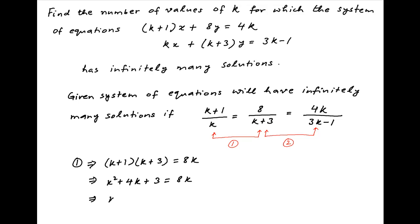Therefore, k² - 4k + 3 is equal to 0, and therefore k is equal to 1 or 3.